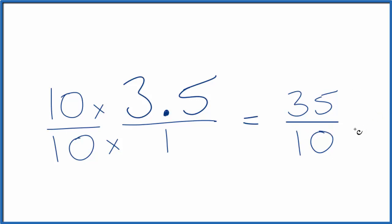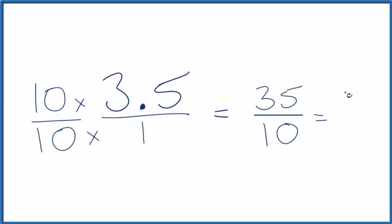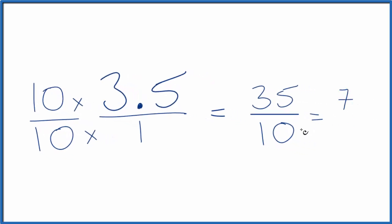Let's simplify this a little bit. We know we can divide 5 into 35 seven times, and 5 goes into 10 two times. So this is a simplified version of the fraction.